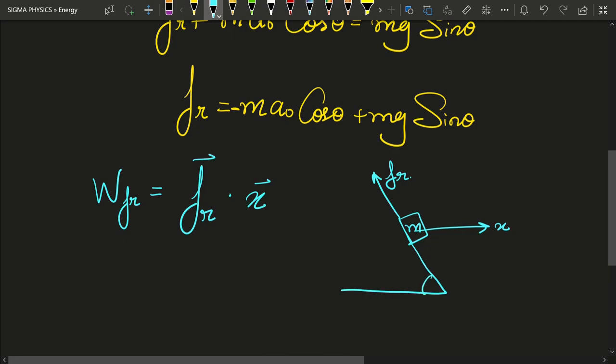And if this is the wedge and if this is theta, then this angle is obviously theta. That means that this would obviously be equal to pi minus theta, because this entire thing is pi. So that would be pi minus theta.